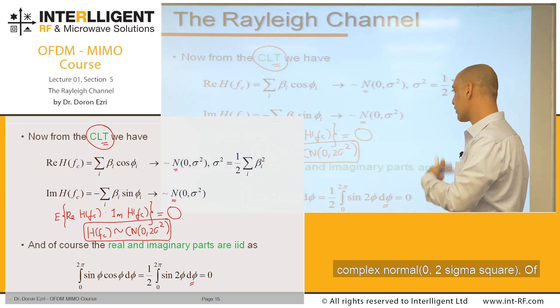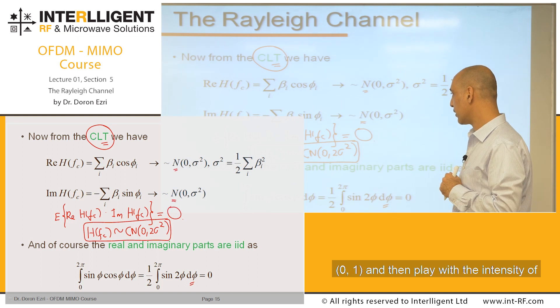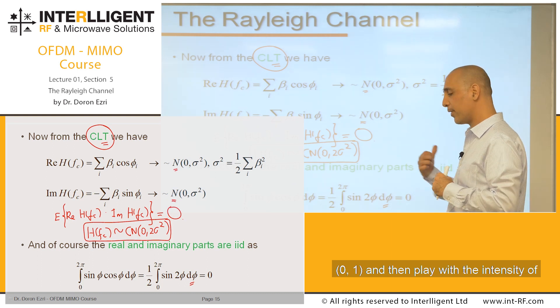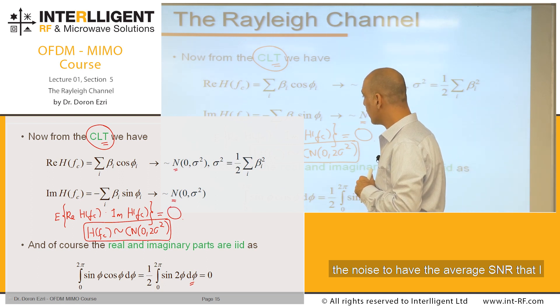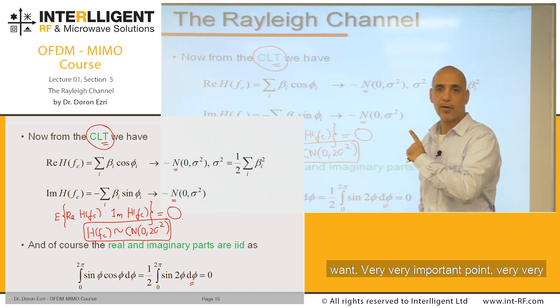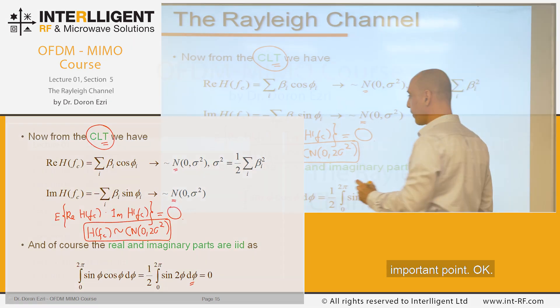I can normalize to complex normal (0,1) and then play with the intensity of the noise to have the average SNR that I want. Very, very important point.